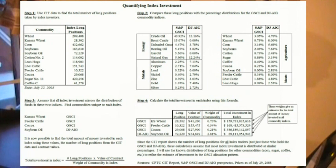Now we can find the total amount of money invested in each index using these values, the number of long positions from the CIT data, and the values of the actual commodity contracts. The formula is: total investment in the index equals the number of long positions times the value of the contract, divided by the weight of the commodity in the index. Then we simply calculate the total investment in each index using this formula.